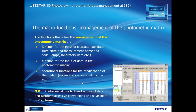Let's start with the management of the photometric metrics. The functions that allow this management include: functions for the input of characteristic data — luminary measurement name and code, lamps, laboratory data, etc.; functions for the input of data in the photometric metrics; and operational functions for the modification of the metrics, such as normalization, symmetrization, etc.